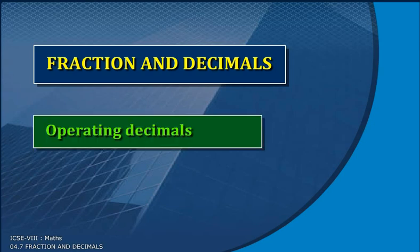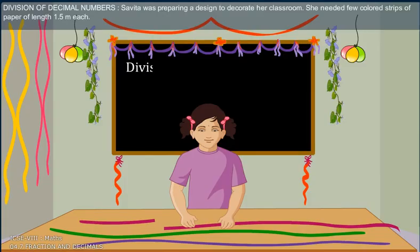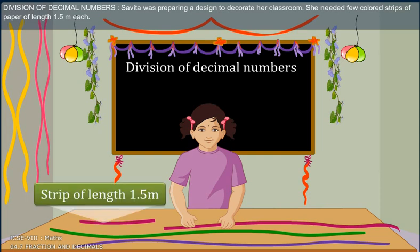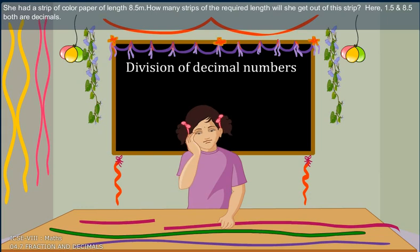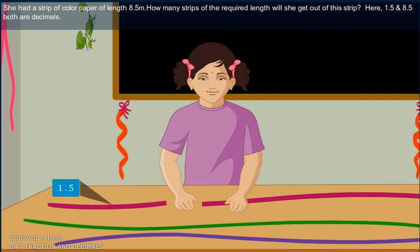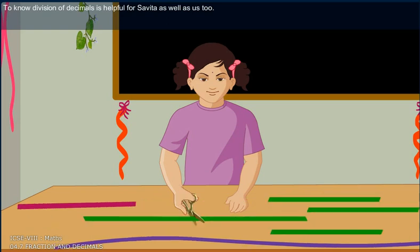Fraction and decimal: operating decimals, division of decimals. Division of decimal numbers. Savita was preparing a design to decorate her classroom. She needed few colored strips of paper of length 1.5 meters each. She had a strip of colored paper of length 8.5 meters. How many strips of the required length will she get out of this strip? Here, 1.5 and 8.5 both are decimals. To know division of decimals is helpful for Savita, as well as us.